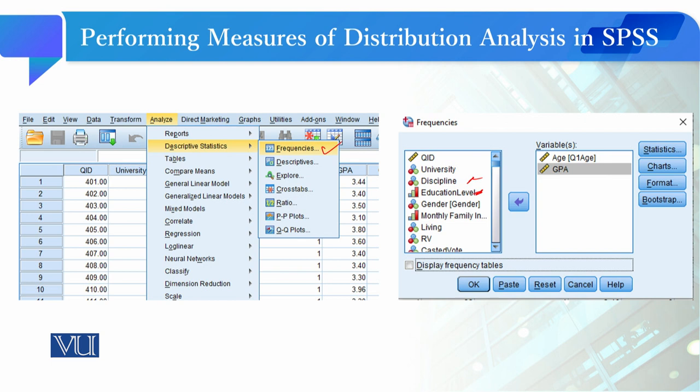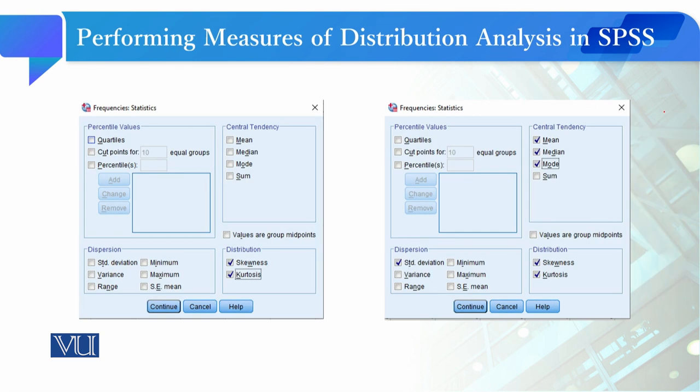After you select the variable, the next step is to go to Statistics and click on it. Then you will have options where you can see central tendency, dispersion, and the distribution tab.